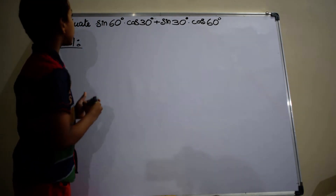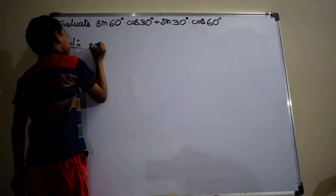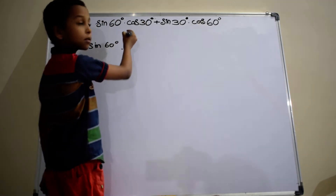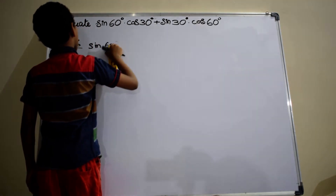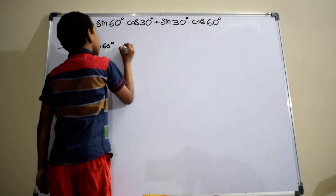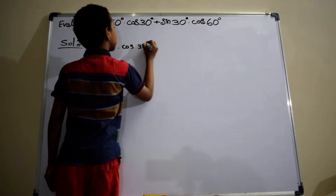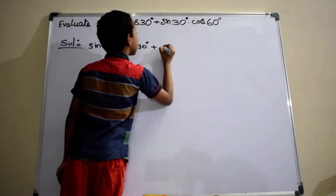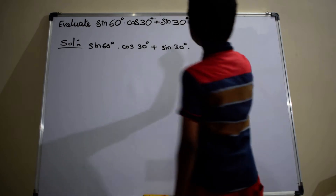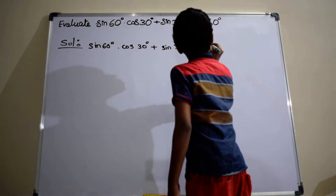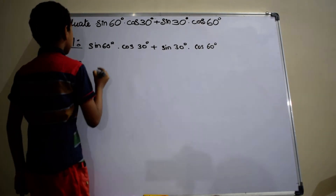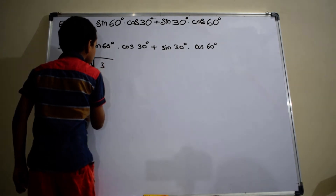Given that sin 60 degrees into cos 30 degrees plus sin 30 degrees into cos 60 degrees. Sin 60 degrees equals to root 3 by 2, and cos 30 degrees also equals to root 3 by 2. So we write root 3 by 2.